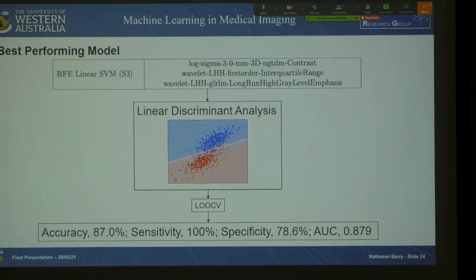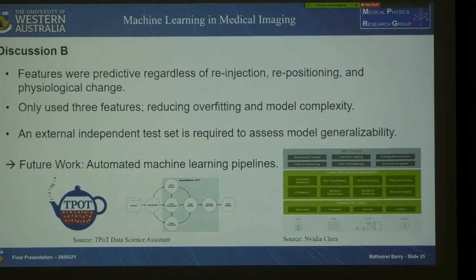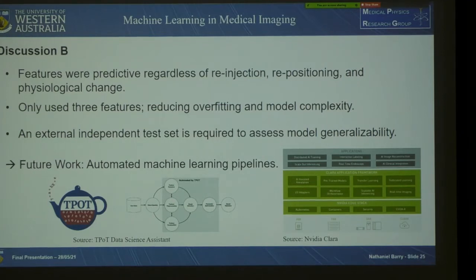For the discussion: we found features were reproducible regardless of re-injection, repositioning, and physiological change in the patient. We only used three features to reduce overfitting and model complexity, increasing interpretability. However, since feature selection was performed on the same data that was then cross-validated, those results are optimistically biased. We require an independent test set to assess model generalizability, but due to the lack of data we couldn't set aside an independent test set — we wanted to train on everything available.